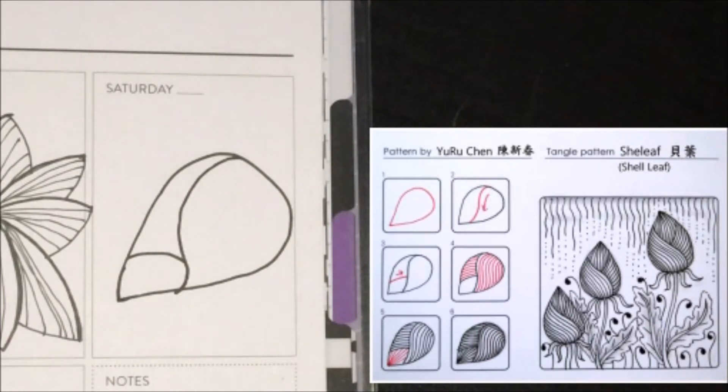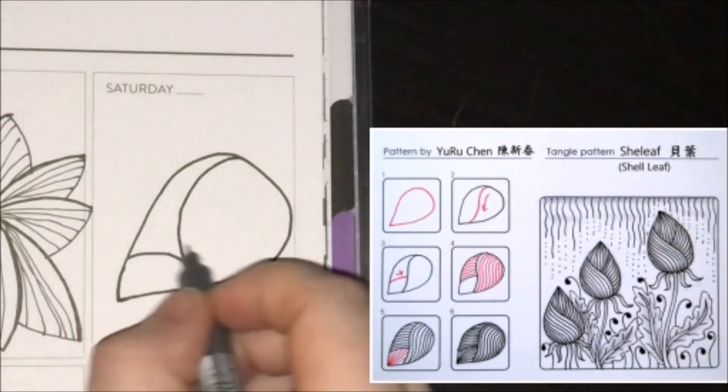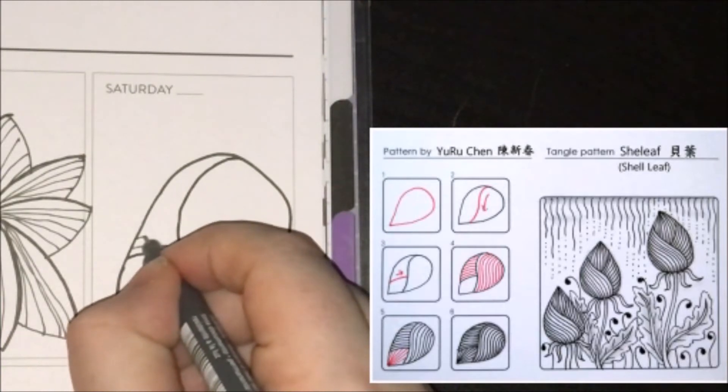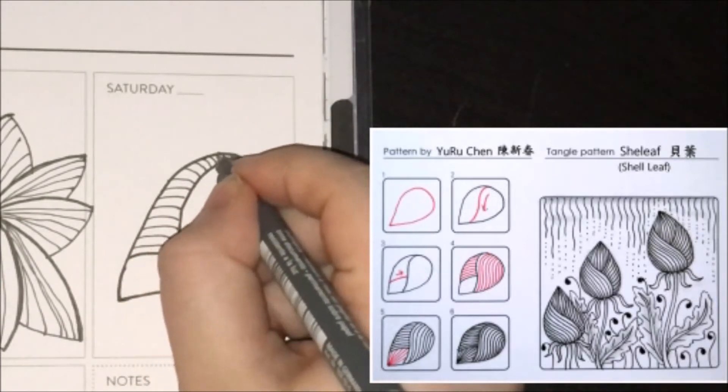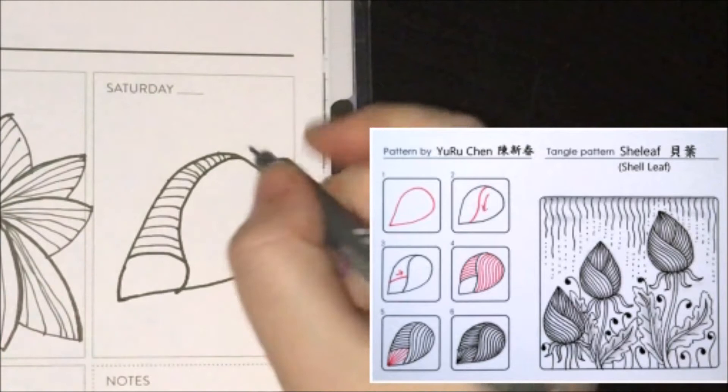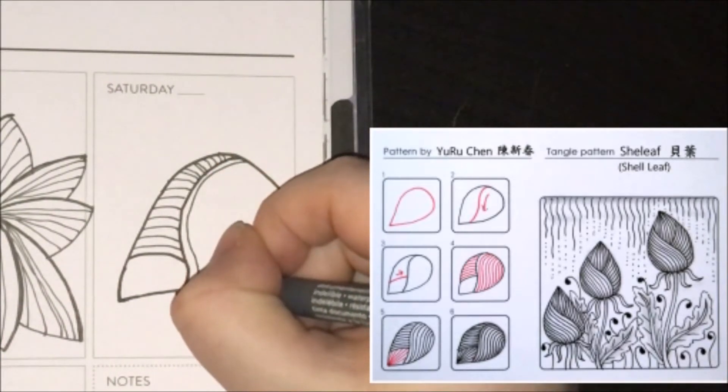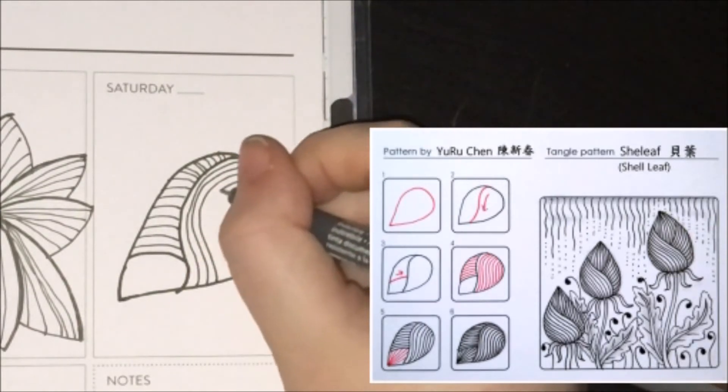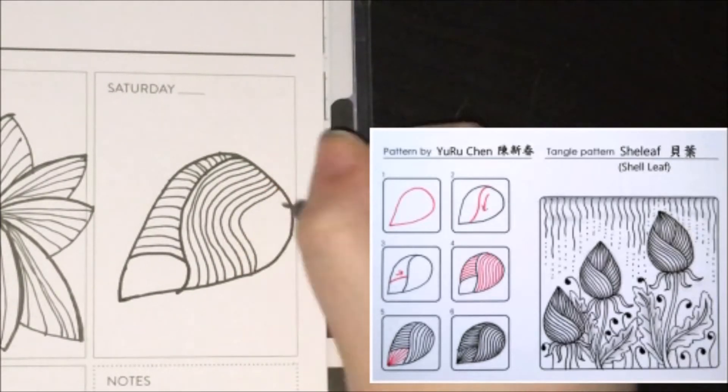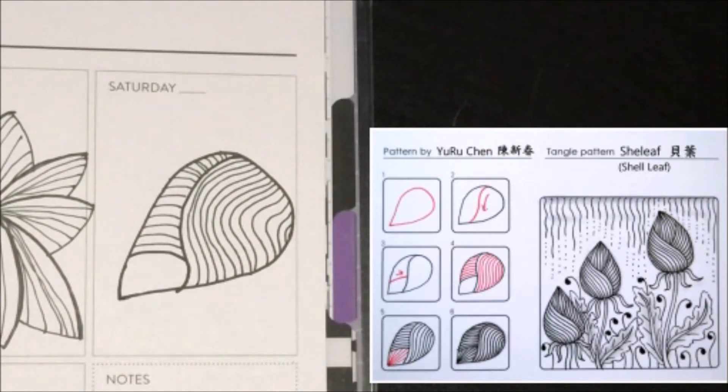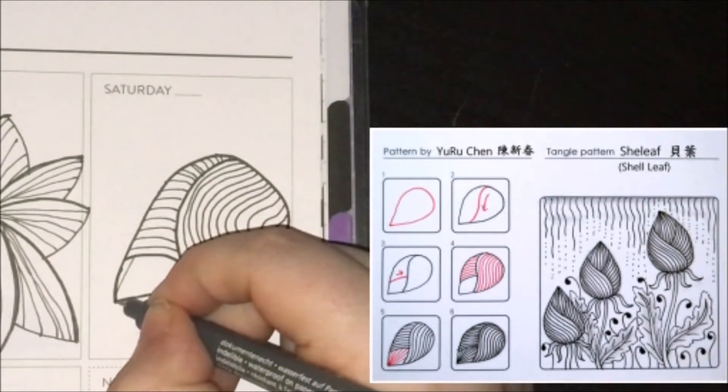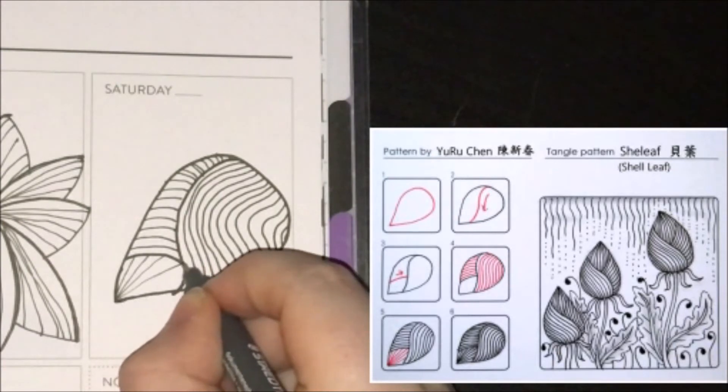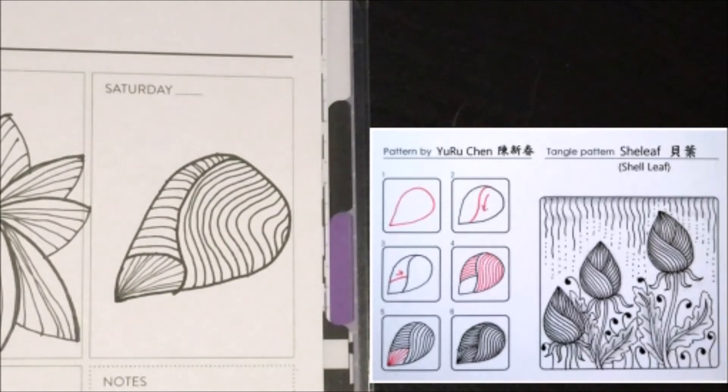Then to add in detail, with the smaller part, you're going to echo the top curve that you drew in last. And with the larger part, you're going to follow the S-shape. And as a final bit of detail, we're going to go into the top portion and draw lines that go radially out towards the other two portions. Add a bit of detail in there. And this is Shell Leaf.